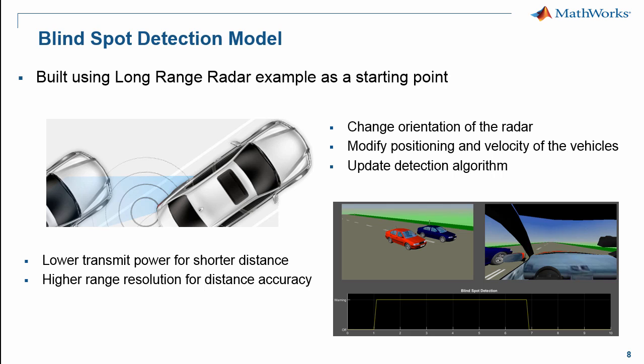Let's move on to the blind spot detection model. As with the SimRF example, we've used the long-range radar example as a starting point to show the commonality between the various models and how with some small changes you can adapt the basic application model. The main changes made to the model include the orientation of the radar — instead of facing out the front of the vehicle, it's looking out towards the side rear of the vehicle, looking at the blind spot. We also changed the positioning and velocity of the vehicles under simulation, placing them in lanes right next to each other. We've updated the detection algorithm accordingly, and as mentioned earlier, the other main difference is lower transmit power for shorter distance and higher range resolution for distance accuracy.